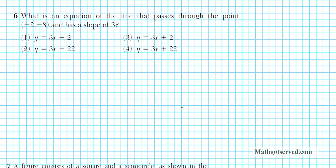For problem 6, we're asked what is an equation of the line that passes through the point negative 2, negative 8 and has a slope of 3. I'm going to use two methods to figure out the solution and whichever method you like you can implement on the day of the exam. Method 1 is the slope-intercept approach.